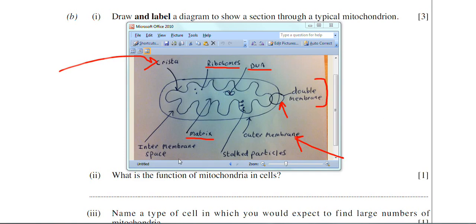A couple more labellings then. I've labelled the intermembrane space. That's the space between the outer and inner membranes. And lastly, there are the stalked particles. They're the structures that are protruding from the surface of the crista there. So that's a typical diagram of a mitochondrion with all its labellings in place there.